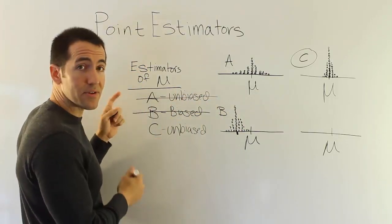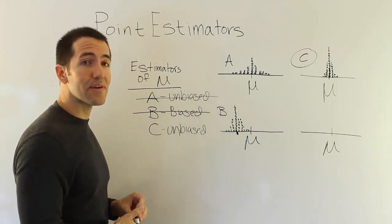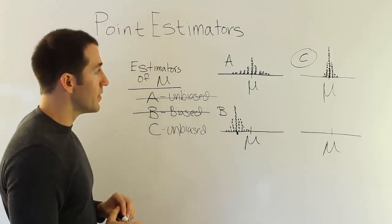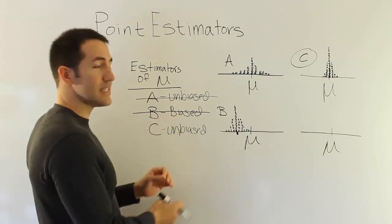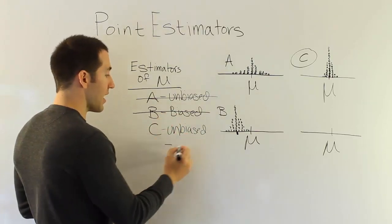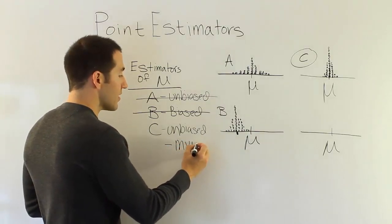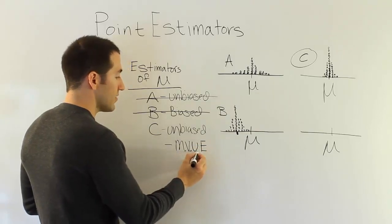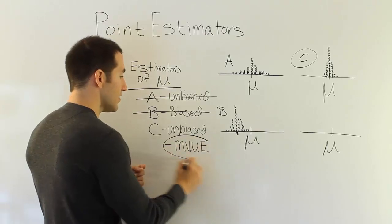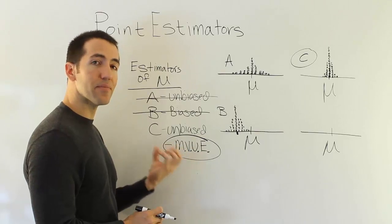Notice that A was unbiased, that was a good thing, but between A and C, since they're both unbiased, we go for C because it has a smaller variance. And then the last thing I want to talk about is the possibility, let's say that C has the absolute smallest variance. If it does, we would say that it's not only unbiased, but it's the minimum variance estimator. So the minimum variance unbiased estimator, if you put it all together. This is the trait that we like our point estimators to have. We want them to be unbiased, but also have the smallest variance.